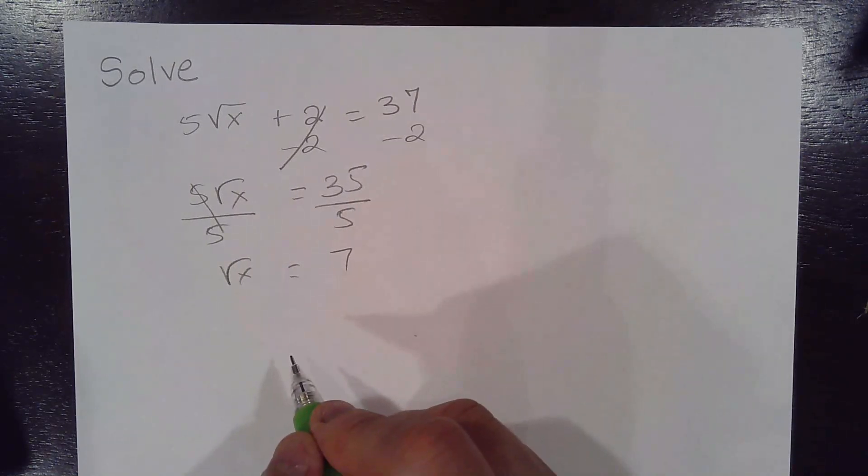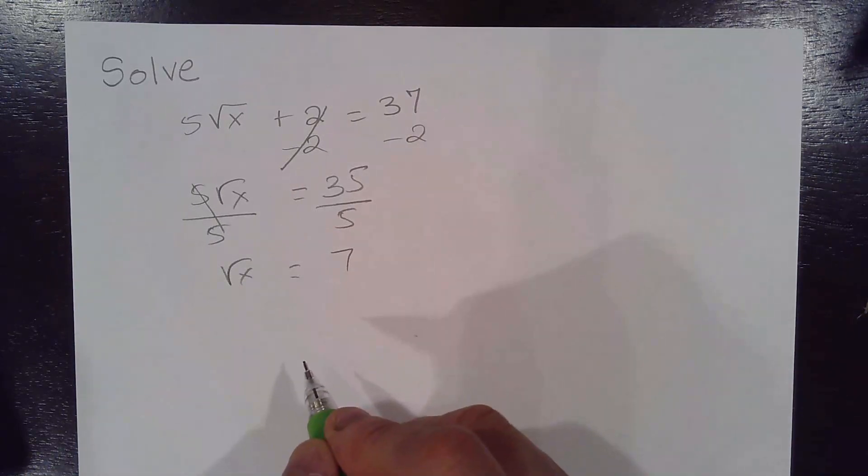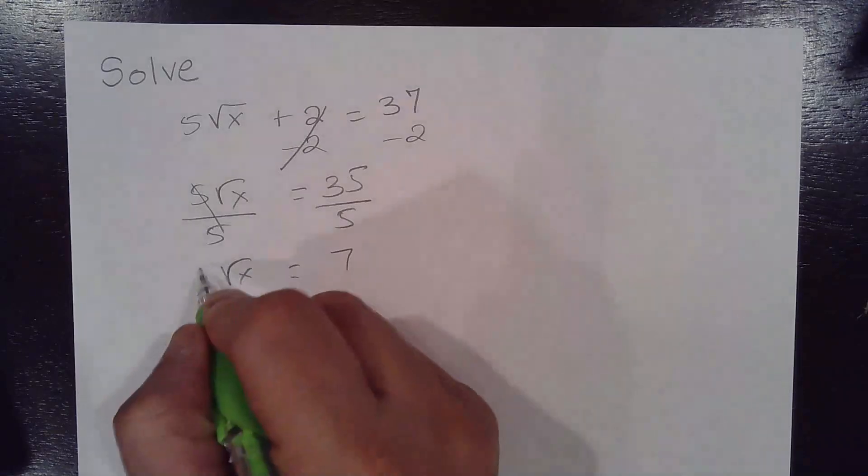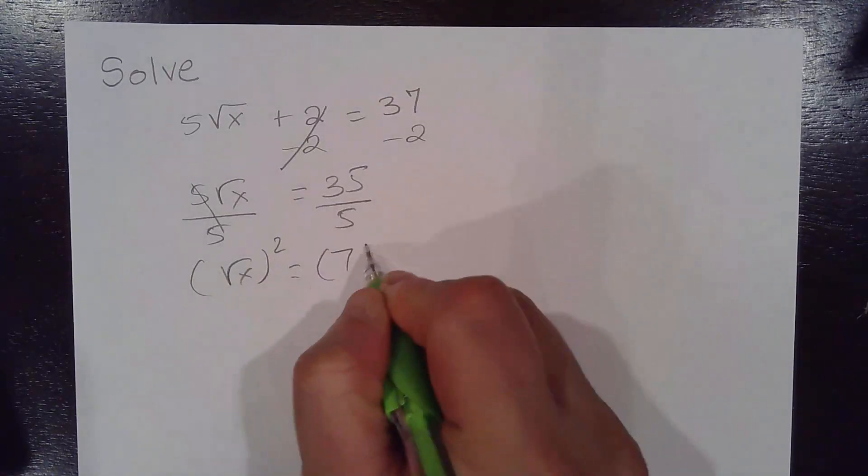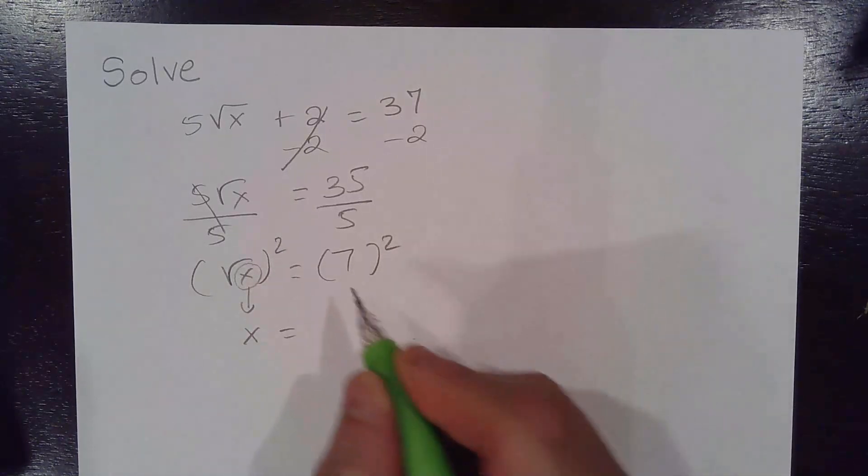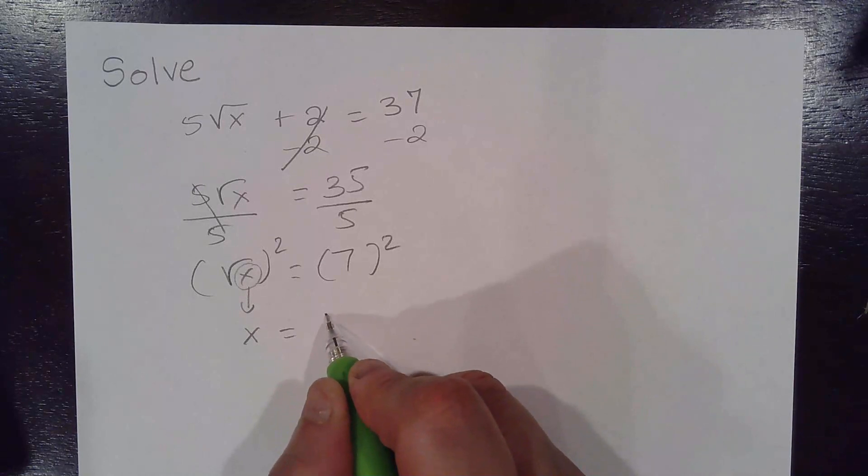And to solve for x, we need to square both sides of the equation. The square cancels the square root, and what comes out is the radicand. You end up with x equal to 7 squared, which is 49.